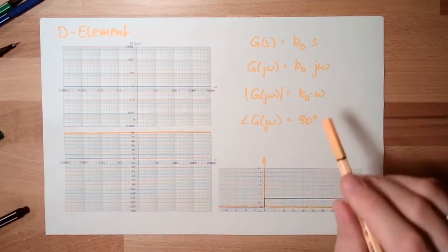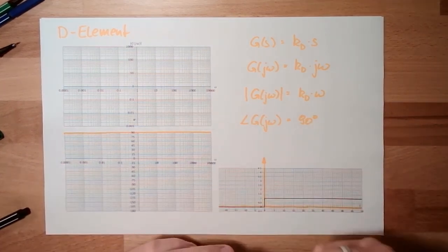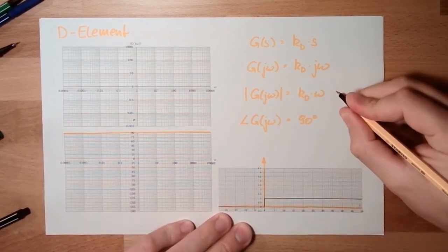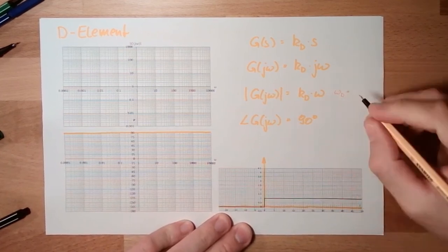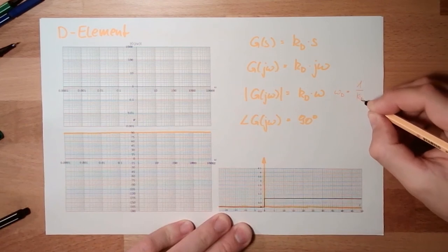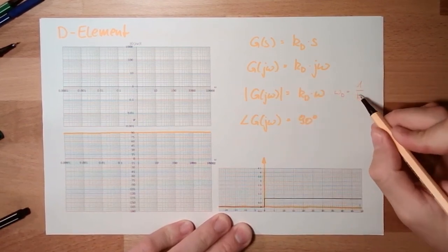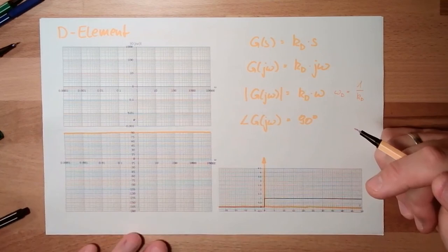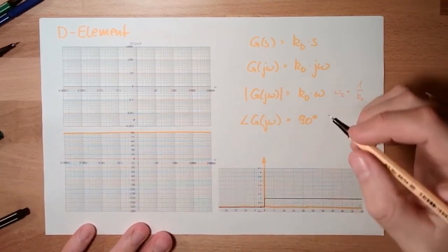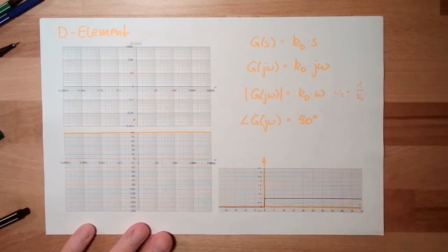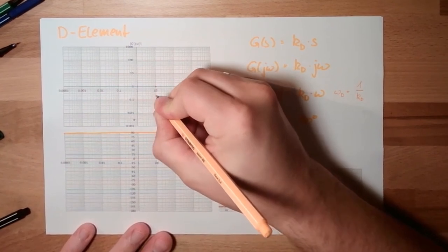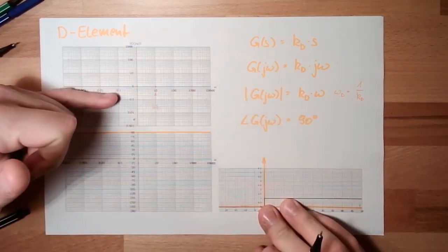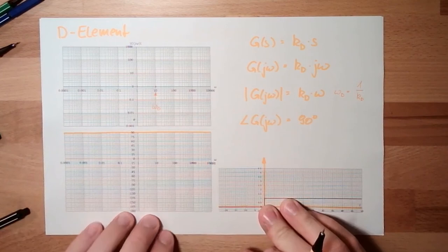For here, we also have to calculate, or think a little bit, when this will be 1. At what omega this will be 1? The pinching frequency. If this omega is exactly 1 divided by KD, this will get 1. Because 1 divided by KD multiplied by KD is 1. So let's assume, I don't know, KD was 0.1. We are here. Here is the pinching frequency, omega D. We pinch through the 1 line. This is the condition for pinching through the 1 line.